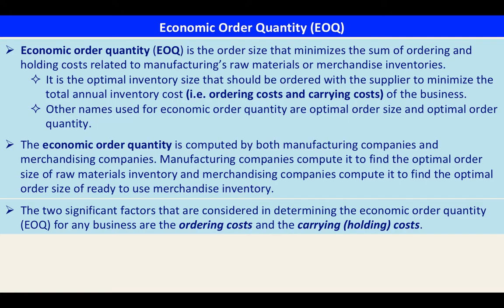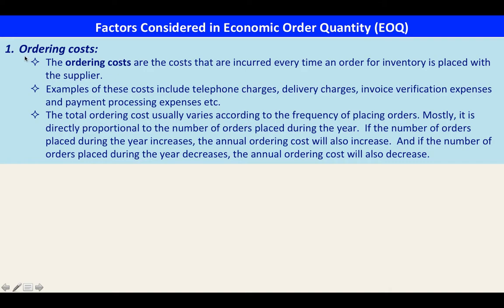The two significant factors considered in determining the economic order quantity are ordering costs and carrying costs. Ordering costs are the costs incurred every time an order for inventory is placed with a supplier. Examples include telephone charges, delivery charges, invoice verification expenses, and payment processing expenses. The total ordering cost is directly proportional to the number of orders placed during the year: if orders increase, annual ordering costs increase; if orders decrease, ordering costs decrease.